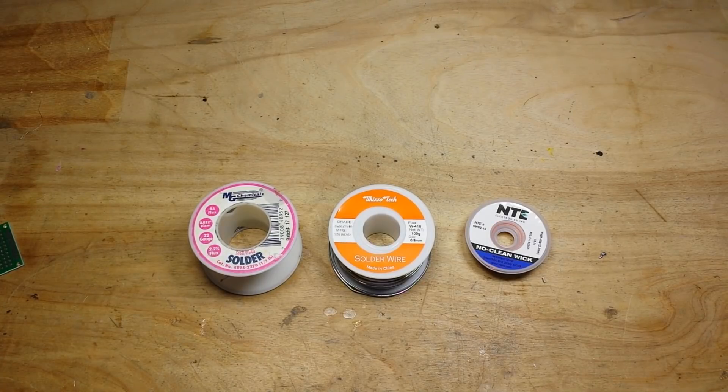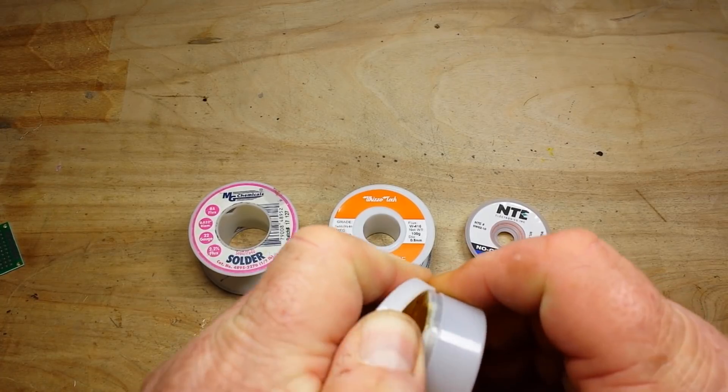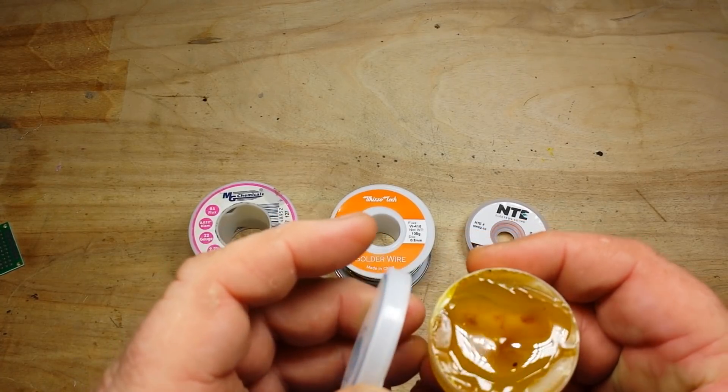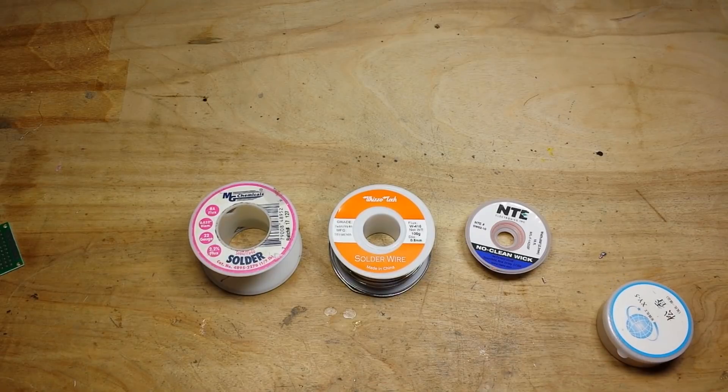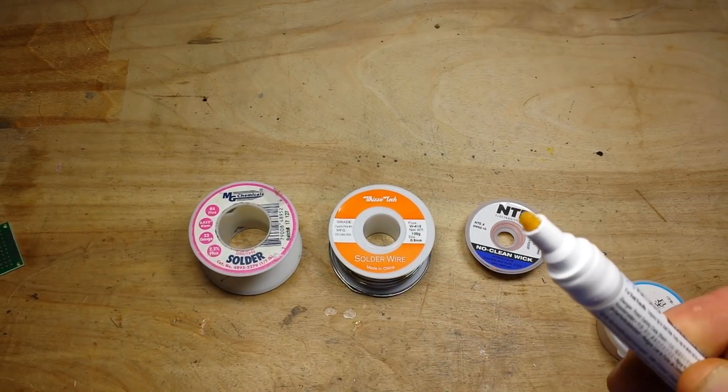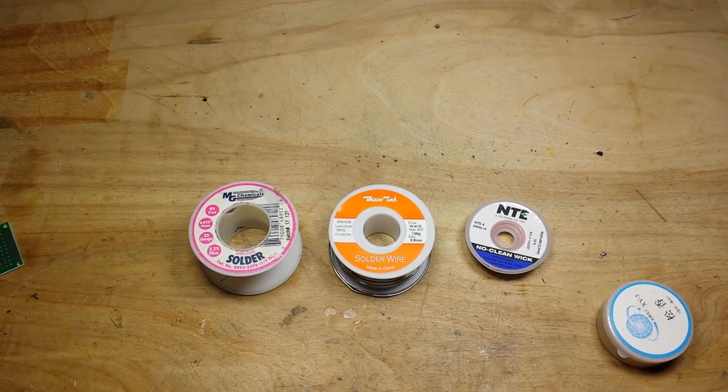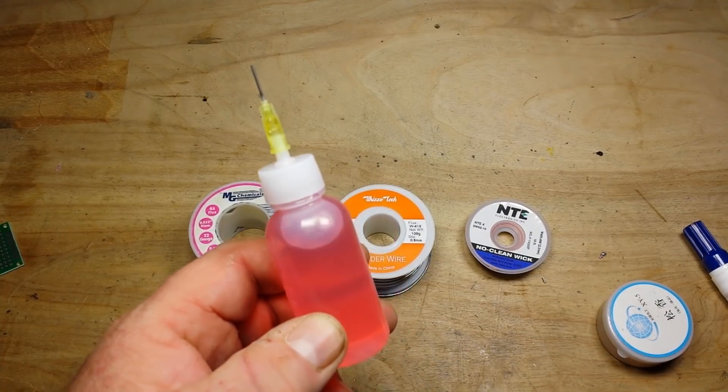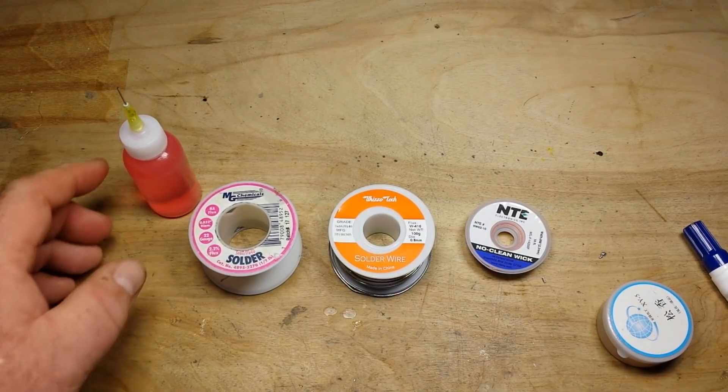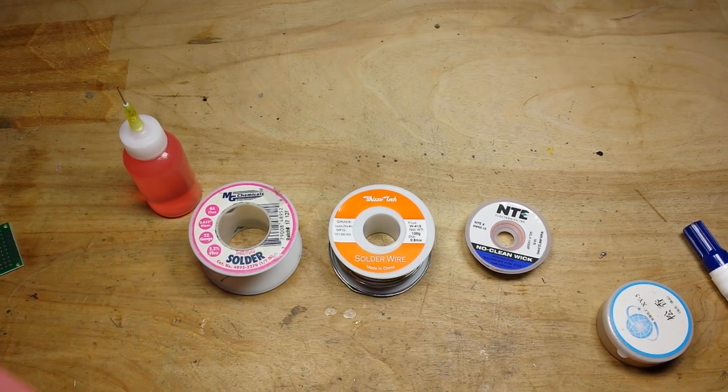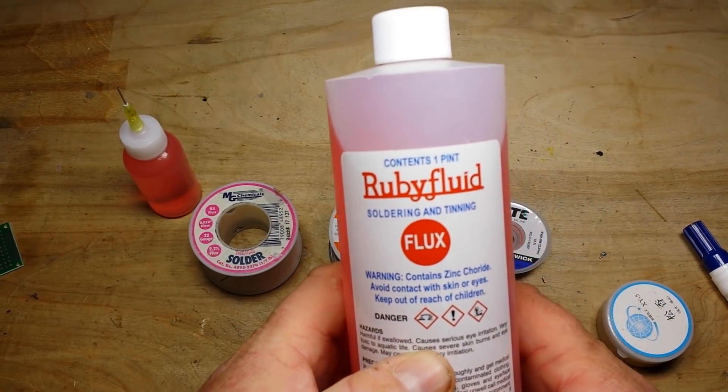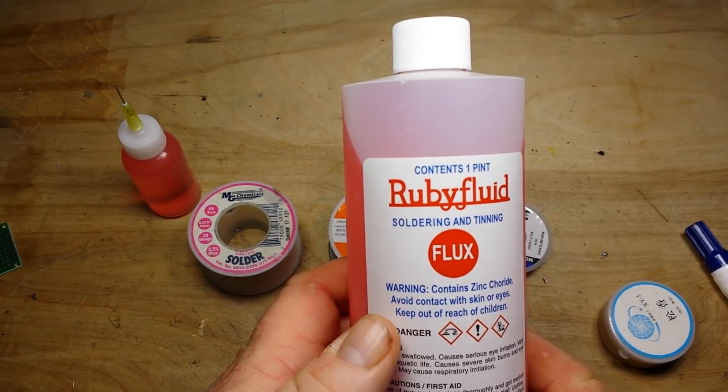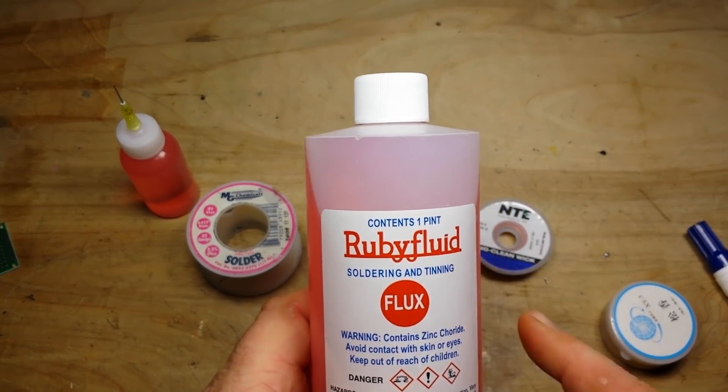Which is the final thing in our mix. You've seen me in the past use some paste flux and also the flux pens like this. I thought we'd try something different: a liquid flux in a needle applicator bottle. This stuff is Ruby Fluid. I've heard good things about it, so I thought I'd check it out. It is a little bit caustic, but hey, that's what makes it fun to play with, right?